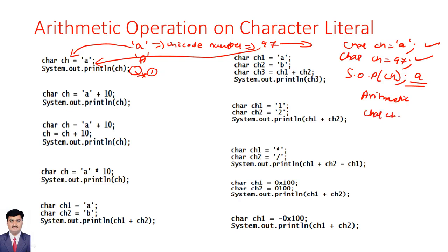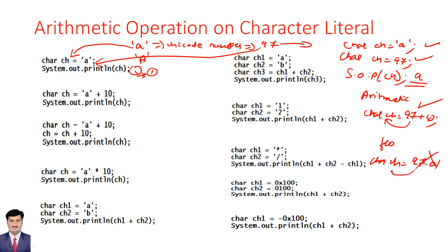So char ch = 97 + 10 — yes, it can be done. The character data type accepts only integer literals other than character single-quote form. It accepts only integer constants and integer literals. For floating point literals — for example, char ch = 97.01 — this is not allowed because integer constant support exists in Unicode but not for floating point. We will see some arithmetic operations now.